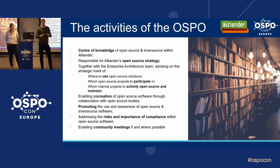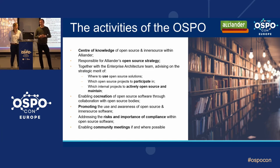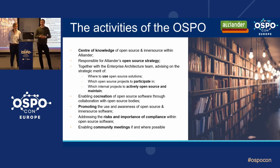Sixth, we are addressing the risk and importance of compliance with open source software. A good example is the open source review checklist we introduced, which gives an overview of commonly used open source licenses and how to treat code under them. We already see this helps teams make decisions on what open source software to use more wisely, saving time and costs while reducing risk for Alliander as a whole.